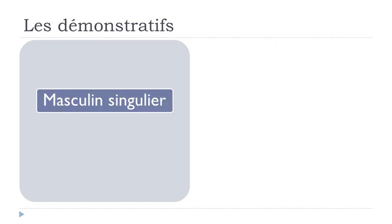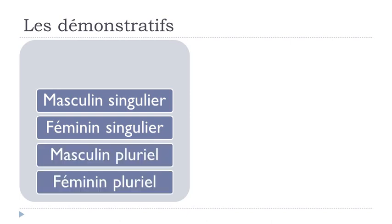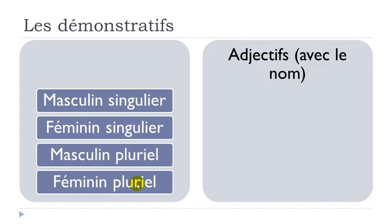So let's start. For the adjectif démonstratif, we'll see the masculine singular form, feminine singular form, masculine plural form, and then feminine plural form. Masculin singulier, féminin singulier, masculin pluriel, and then féminin pluriel. When we talk about les démonstratifs, technically it would be translated in English like 'this' or 'that', but in French we have the difference between masculine and feminine forms.